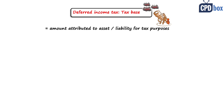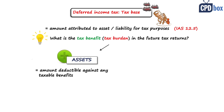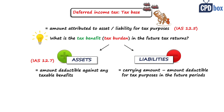The tax base is the amount attributed to the asset or liability for tax purposes — that's the definition in IAS 12, paragraph 5. But how should that be understood? What is the tax benefit or tax burden of some asset or liability in future tax returns? IAS 12 gives us guidance. For assets, the tax base is the amount deductible against any taxable benefit — that's paragraph 7 of IAS 12. For liabilities, the tax base is the carrying amount of the liability less the amount deductible for tax purposes in the future — that's paragraph 8 of IAS 12.